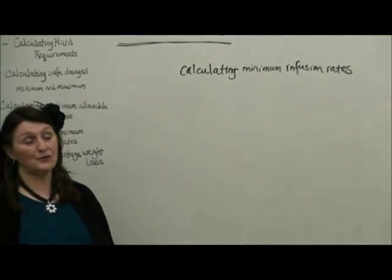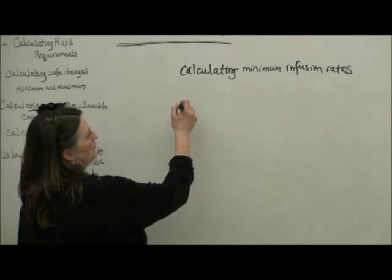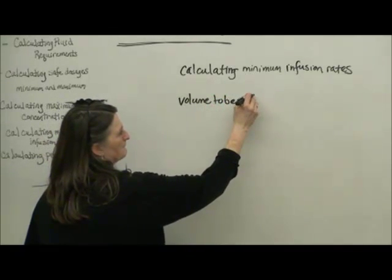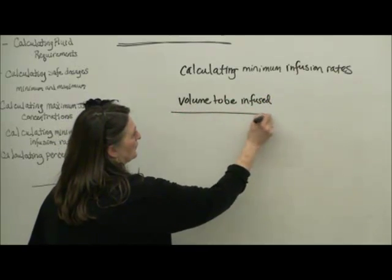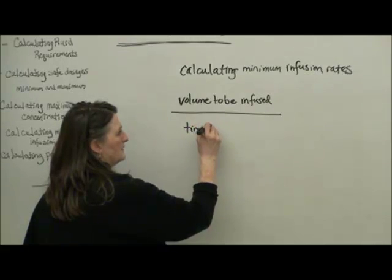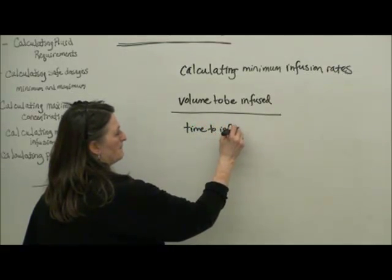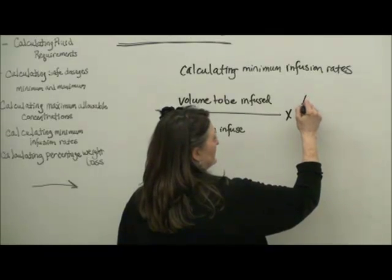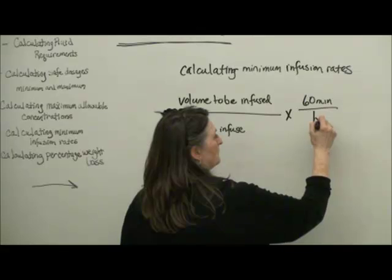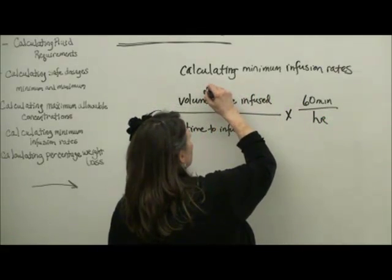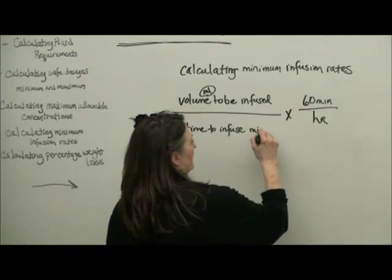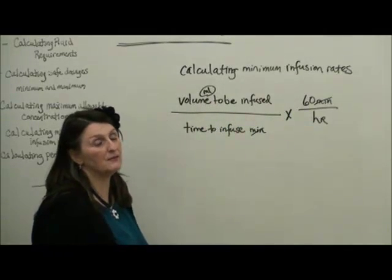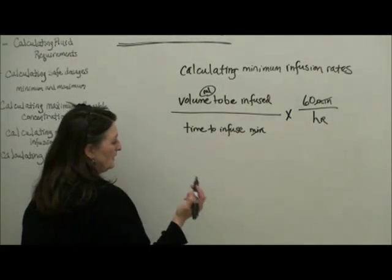So to calculate a minimum infusion rate, we take our volume to be infused over the time to infuse, and then we multiply that by 60 minutes in an hour because these are in milliliters and this is in minutes. So we will end up with milliliters per hour, which is how we would program the pump if the pump didn't do it for ourselves.